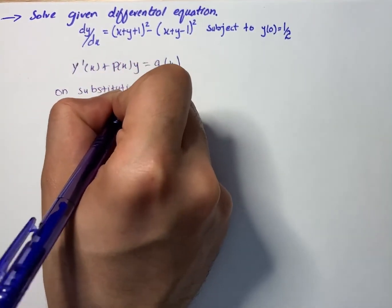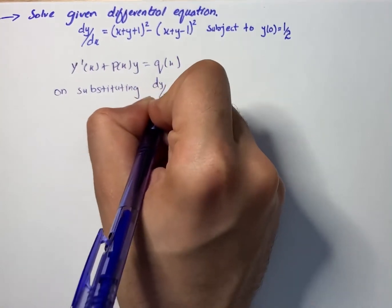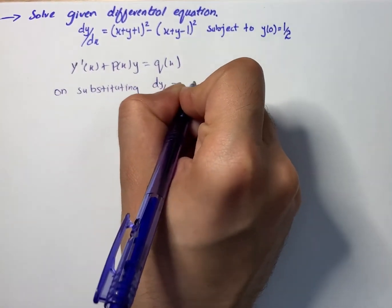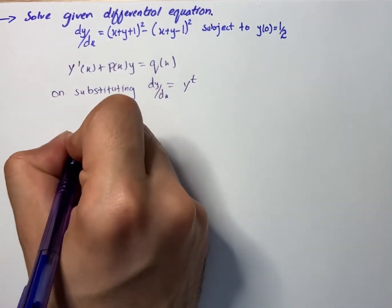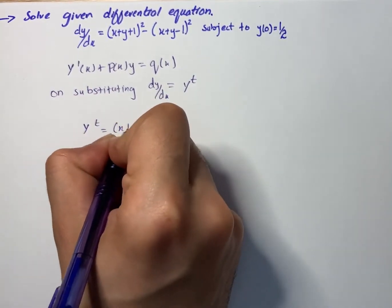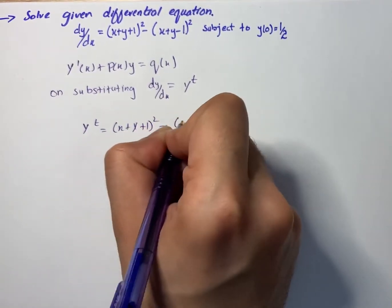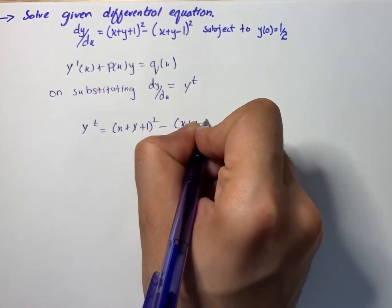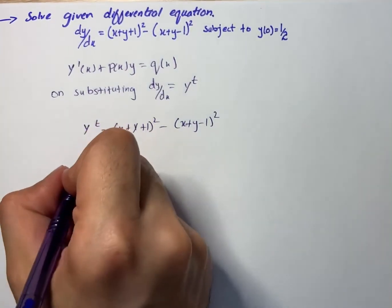What we're going to substitute: dy/dx equals y raised to power t, so we have y' equals (x + y + 1) whole square minus (x + y - 1) whole square. When rewriting in the form of a first order linear ordinary differential equation, we will have...